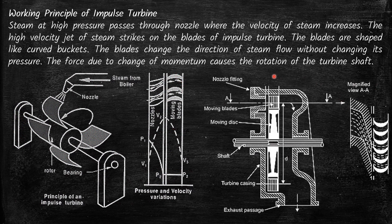Here you can see a cutout diagram of an impulse steam turbine. This is the moving disc and the shaft is attached to it. This is the side view of the turbine and the nozzle is fitted at one end. Steam enters through this passage, goes over the blade, and exits through this passage.